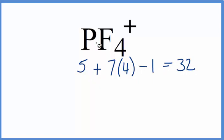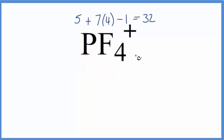To draw the Lewis structure we're gonna put phosphorus at the center. Phosphorus is the least electronegative, fluorine is very electronegative, so we'll put the phosphorus in the center and then we'll put four fluorine atoms around it.